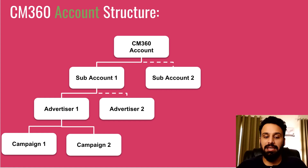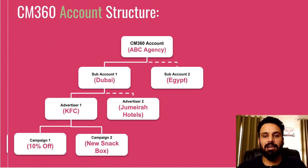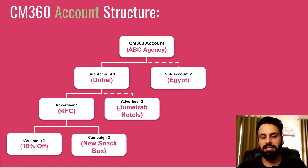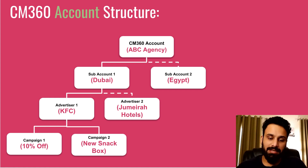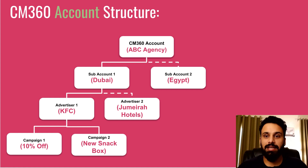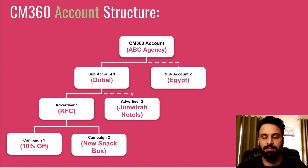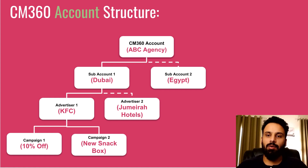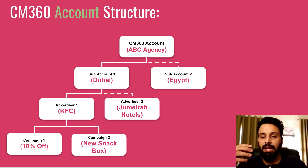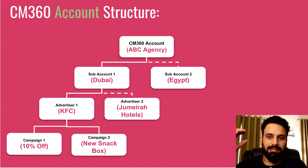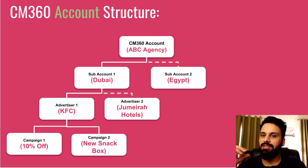To give you a bit of perspective: a Campaign Manager 360 account can have sub-accounts, each sub-account can have one or multiple advertisers, and each advertiser can have one or multiple campaigns. For example, if there is an ABC agency with two offices — one in Dubai and one in Egypt — they will create one sub-account for Dubai clients and another for Egypt clients. Within sub-accounts, you can control which users have access, so only Dubai office employees access the Dubai sub-account.